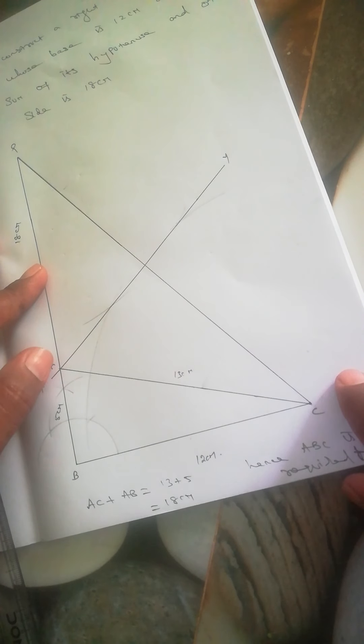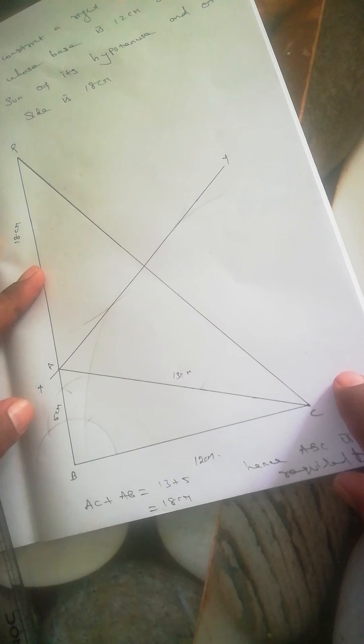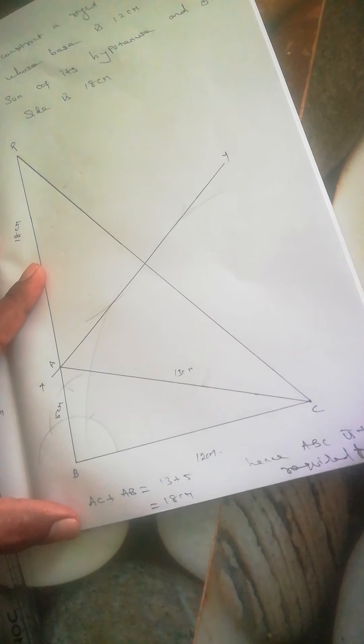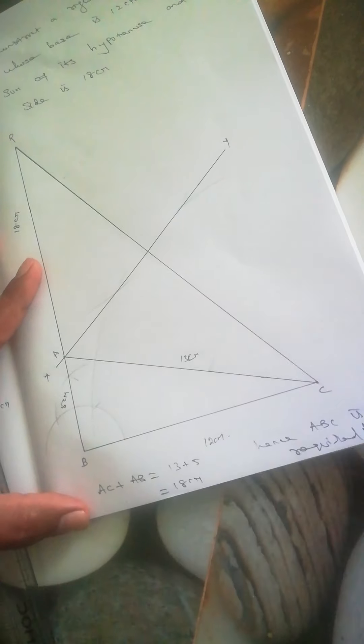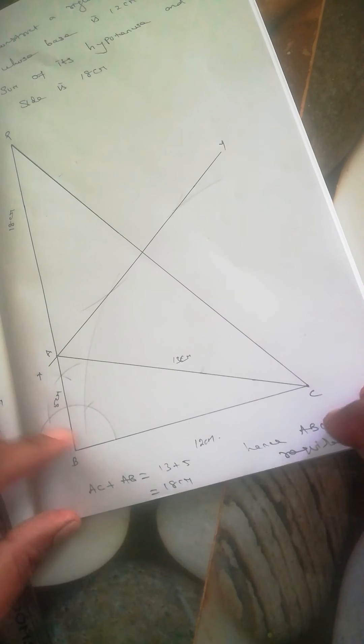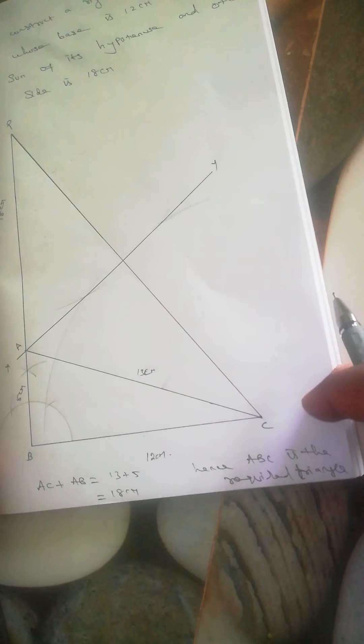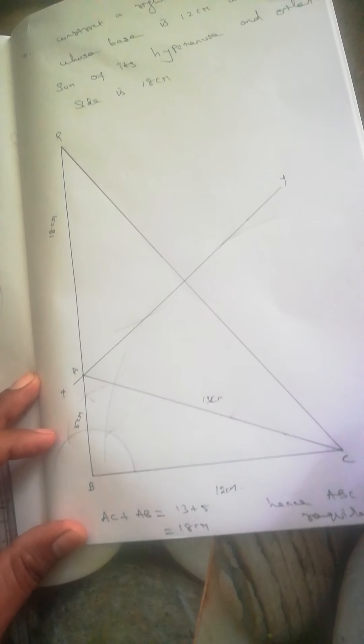Measure with a scale: AC is 13 centimeters and AB is 5 centimeters. 13 plus 5 equals 18 centimeters total, confirming this is the required triangle.